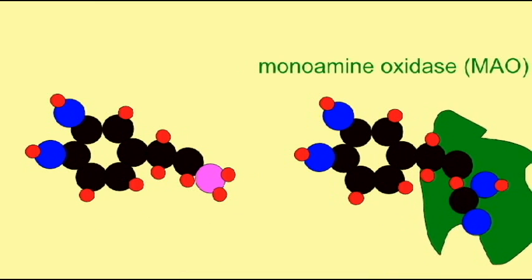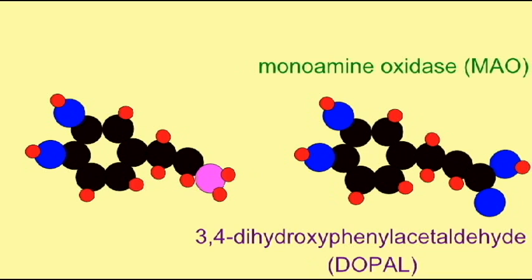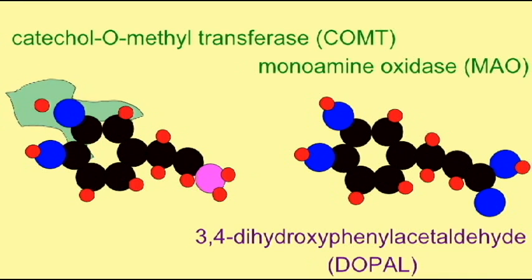The breakdown of dopamine is accomplished by two separate enzymes: monoamine oxidase, and humans have two forms of this gene, monoamine oxidase A and B, and catechol-O-methyltransferase, or COMT.